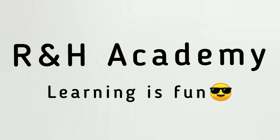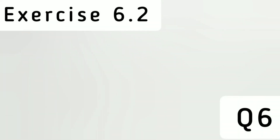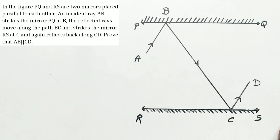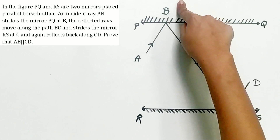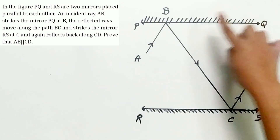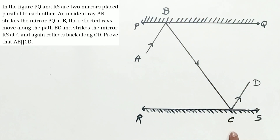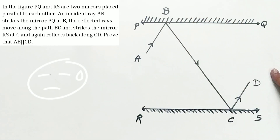Welcome to R&H Academy channel. Question 6 of exercise 6.2 says: PQ and RS are two mirrors placed parallel to each other. An incident ray AB strikes the mirror PQ at B. The reflected ray moves along the path BC, strikes the mirror RS at C, and again reflects back along CD. We have to prove that AB is parallel to CD.